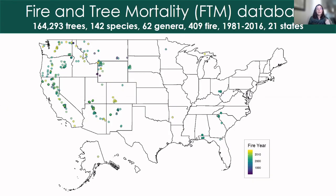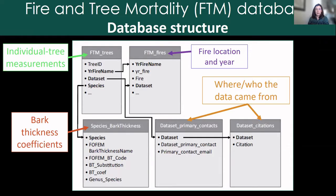In the end, we have a database with 164,000 tree observations — about 170,000 tree observations because some trees have been burnt by multiple fires — covering 142 species, 62 genera, over 400 fires. Most of the observations are in the Western US. It's a lot of trees, but when we start drilling down, there are definitely limitations on what type of analyses you can do once you look at species-specific analyses.